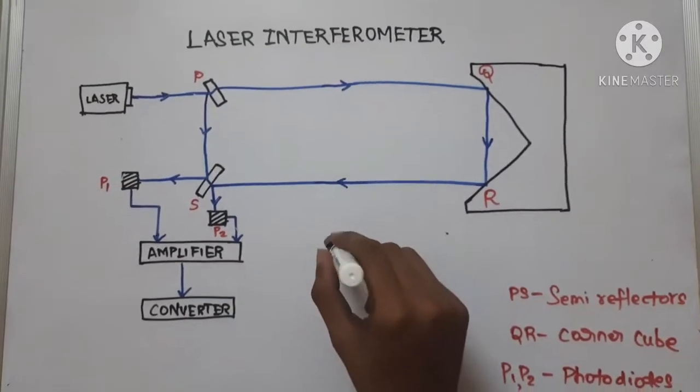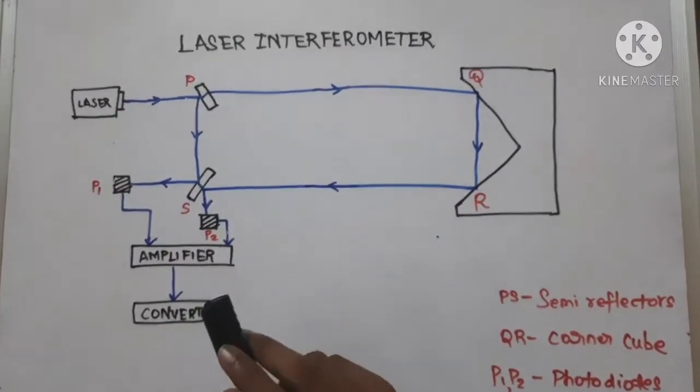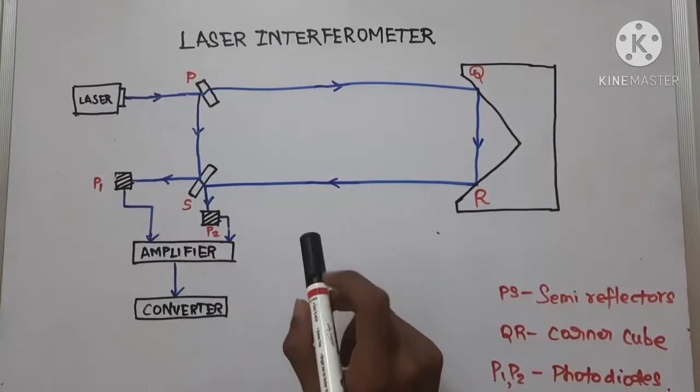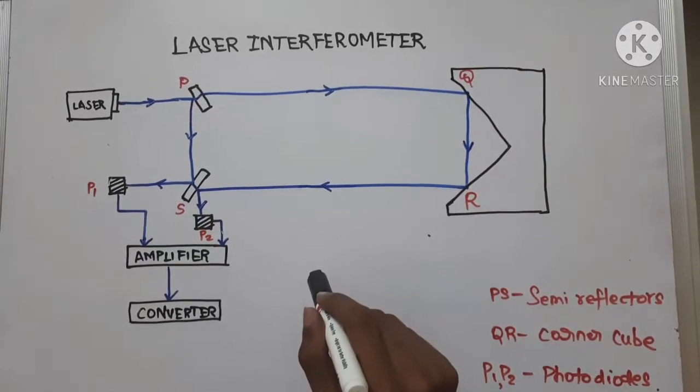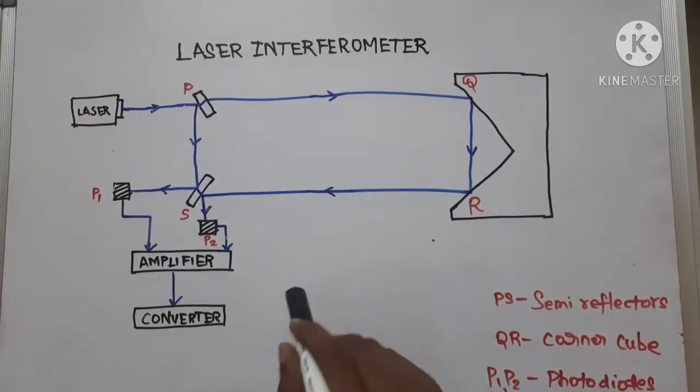It works on the principle of interference. If two rays of same wavelength meet at some point, mutual interference occurs. And the natural interference depends on the phase of two waves at their meeting point.